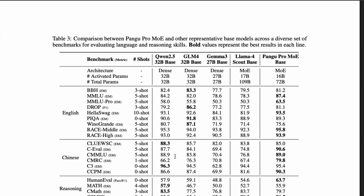It's important to note this is not just an experimental project — the model also performs well on modern state-of-the-art benchmarks. PanGu Pro MoE is compared against Qwen 2.5 32B, GLM4 32B, Gemma 3 27B, and LLaMA 4 Scout base models. One key thing to note: those are dense transformer models of 27–32 billion parameters, while PanGu Pro MoE has 72 billion total parameters but only 16 billion activated parameters.